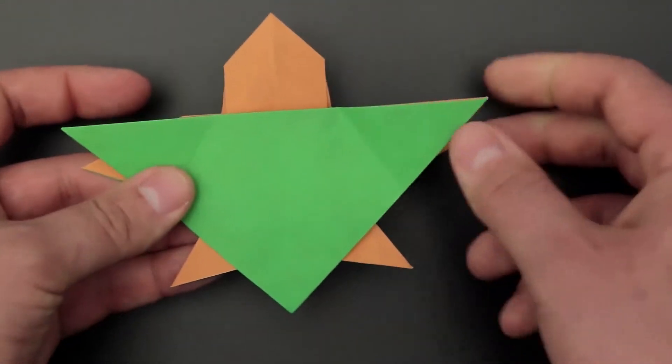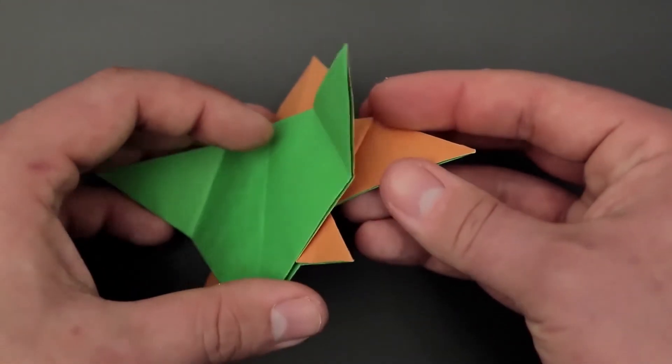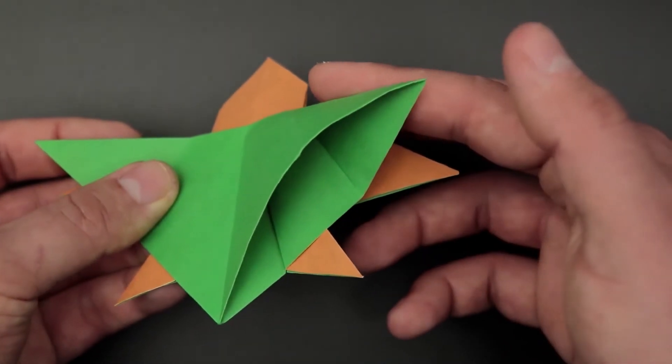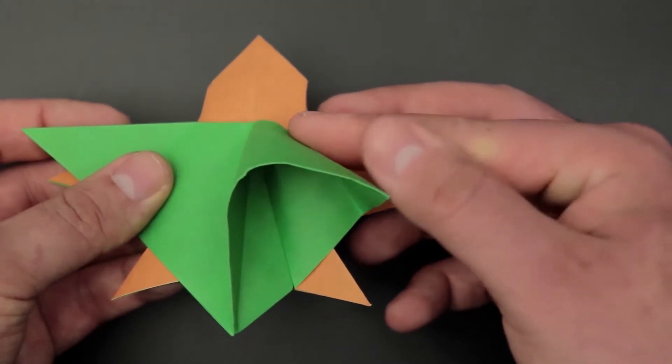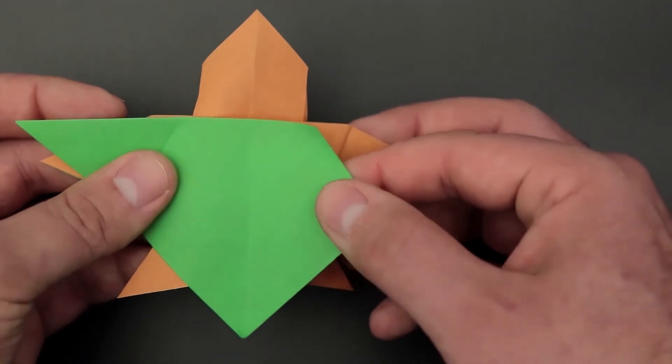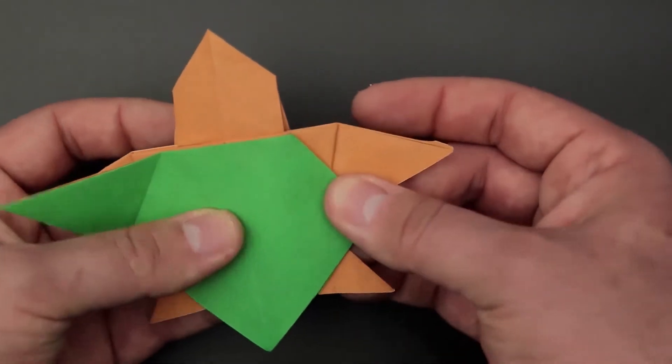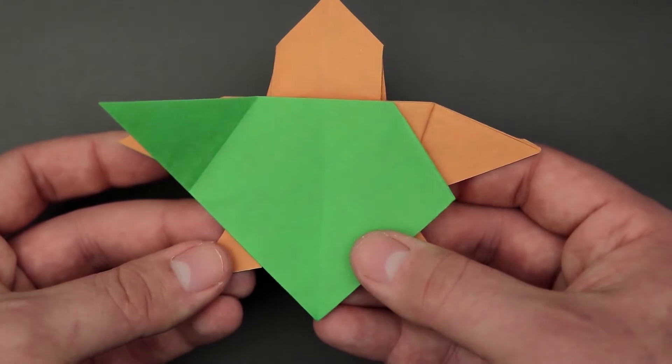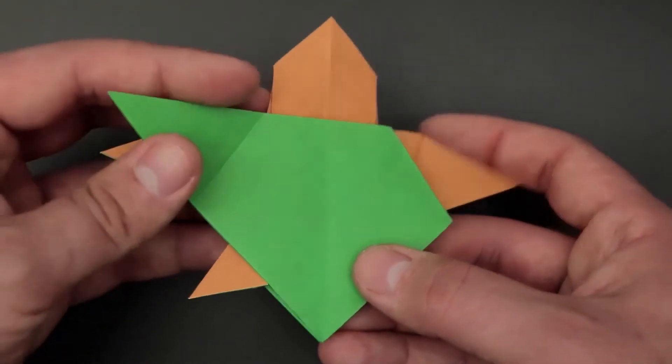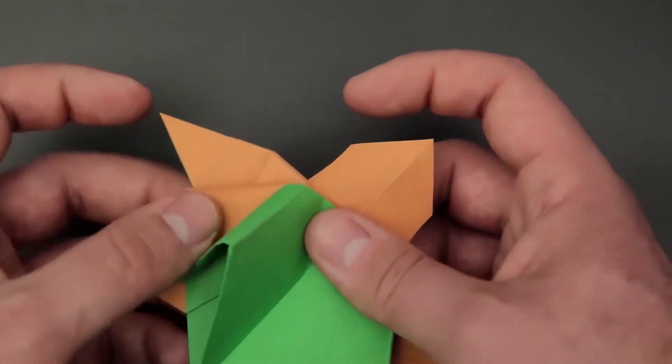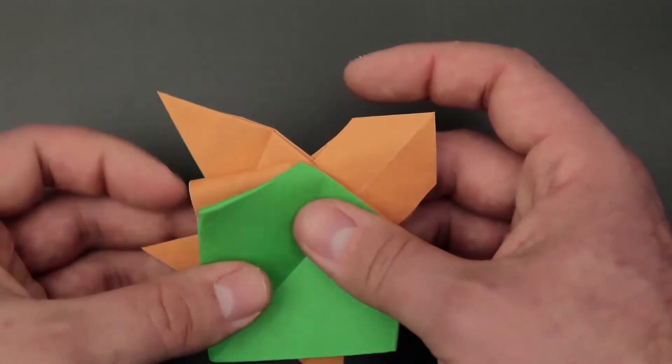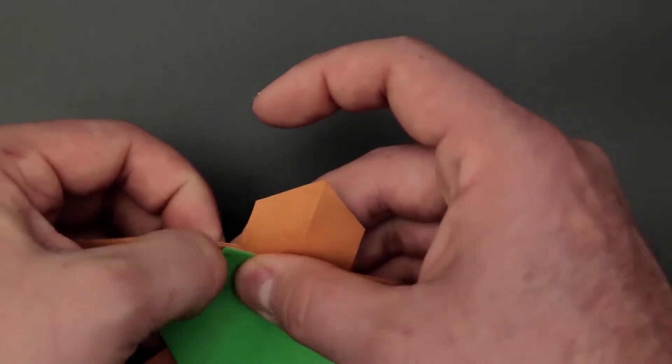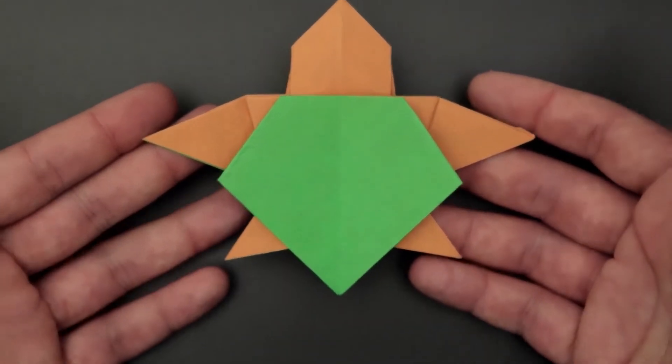And using these creases, let's open the paper and sink the corner inside. The other side is the same.